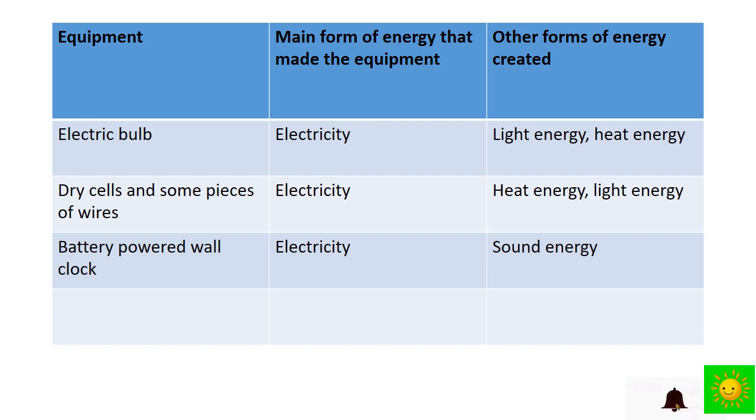By doing that practical, you can complete this table with three columns: Equipment, Main Form of Energy that Made the Equipment, Other Forms of Energy Created. Let's take an example: electric bulb, main form of energy is electricity, energy created are light energy and heat energy. Likewise, dry cells and some pieces of wires: electricity, heat energy and light energy. You can complete this table.